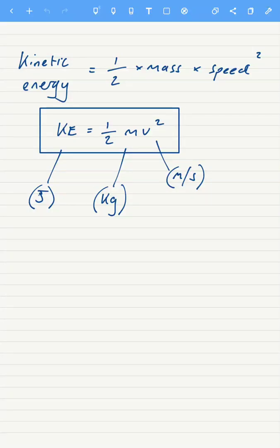Hi there, this is kinetic energy equation practice. The equation at the top is: kinetic energy equals a half times mass times speed squared. And it is speed, not velocity. Kinetic energy, or energy in general, is a scalar quantity. So we can't have velocity on the other side of the equation because velocity is a vector. So it's actually speed — if you're asked that in your exam, V is speed.